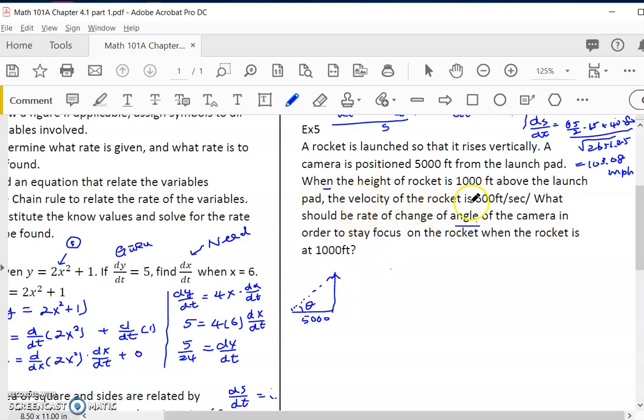The camera is here watching it with an angle, and of course if the rocket goes higher the angle will be higher. They're asking when the height of the rocket is 1000 feet from the launch, the velocity is 600. So we say at a certain point dx/dt is not constant but just at that point is 600 when x is 1000. So this is changing and theta is also changing. What they're asking is what should be the rate of change of angle of the camera in order to stay focused on the rocket when the rocket is 1000 feet. We need dθ/dt.